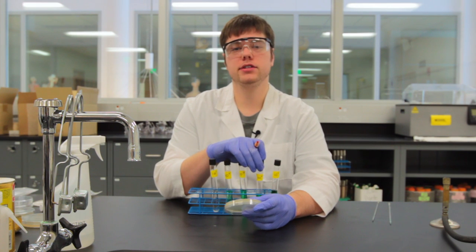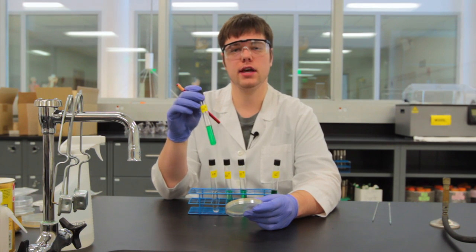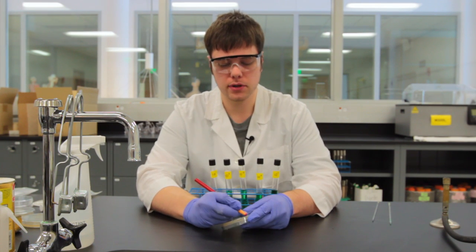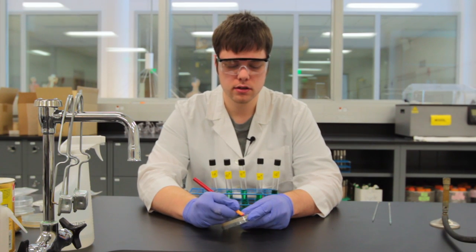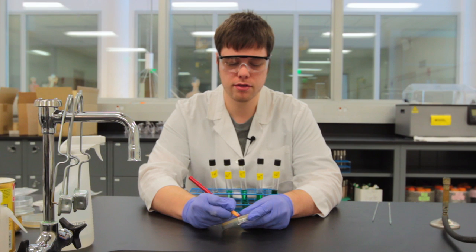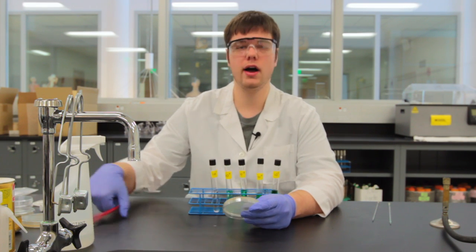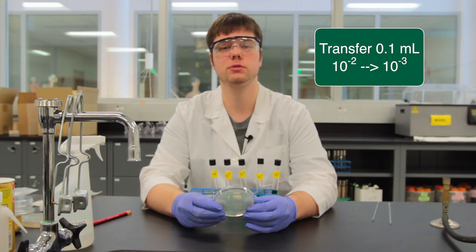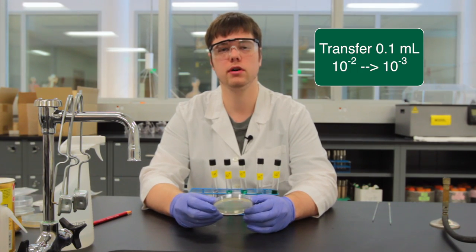My lab manual tells me that I need to use the 10 to the negative 2 dilution for this experiment, so I'm going to label my plate as 10 to the negative 3. The reason why I'm labeling it as 10 to the negative 3 is because I'm only going to be dispensing 0.1 mils onto this plate.